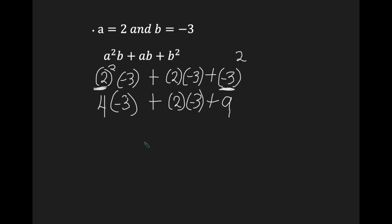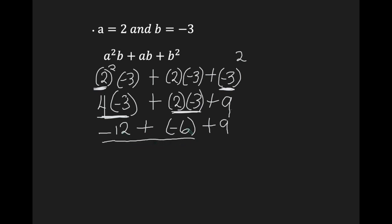Now we rewrite all the values and operators we did not use. Can we multiply or divide from left to right? Yes. I have a multiplication here and a multiplication here: 4 times negative 3 is negative 12, plus 2 times negative 3 is negative 6. Then I add my 9. Can I add or subtract from left to right? Yes. Negative 12 plus negative 6 — when the signs are the same, you add: 12 plus 6 is 18, keep the negative sign, so negative 18 plus 9. When signs are different, subtract and keep the sign of the larger absolute value. The answer is negative 9.